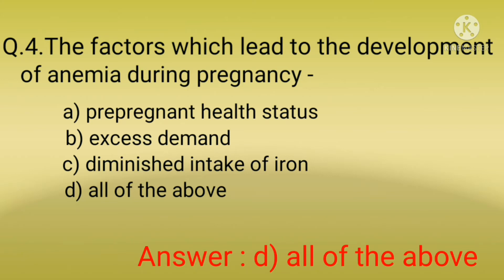In excess demand, there is multiple pregnancy, because of which iron demand becomes more — almost double. Also, women who have rapidly recurring pregnancy within two years following the last delivery also have increased iron demand. In diminished intake of iron, apart from socioeconomic factors, faulty dietetic habits, loss of appetite, and vomiting in pregnancy are responsible factors for the development of anemia during pregnancy.